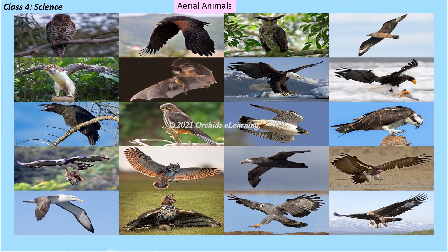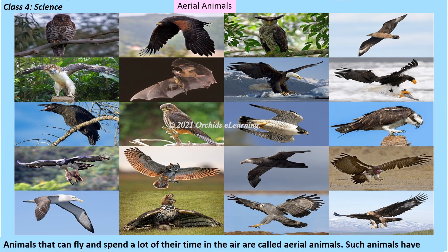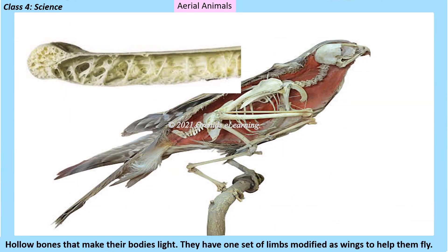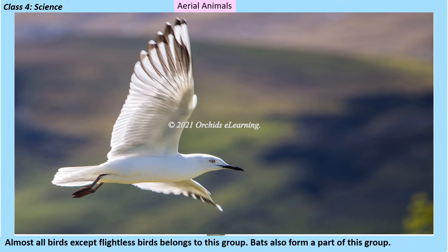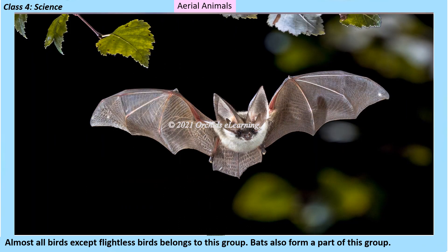Aerial animals: animals that can fly and spend a lot of their time in the air are called aerial animals. Such animals have hollow bones that make their bodies light. They have one set of limbs modified as wings to help them fly. Almost all birds except flightless birds belong to this group, and bats also form part of this group.